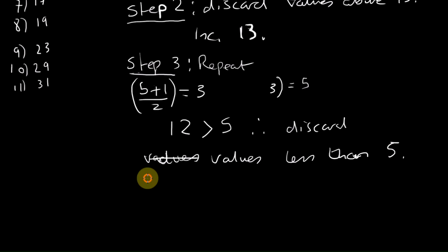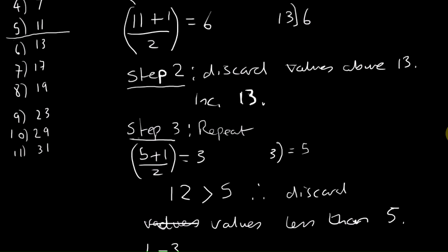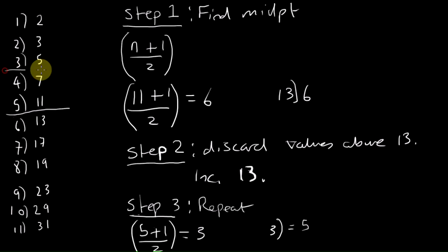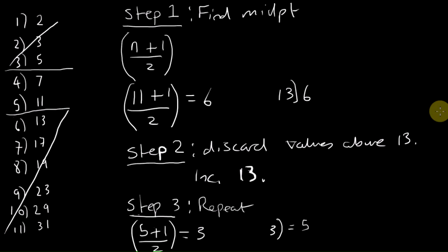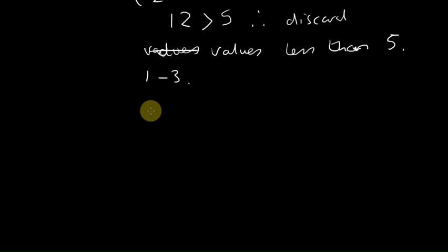So we cross off positions 1 to 3, and we're left with positions 4 and 5.